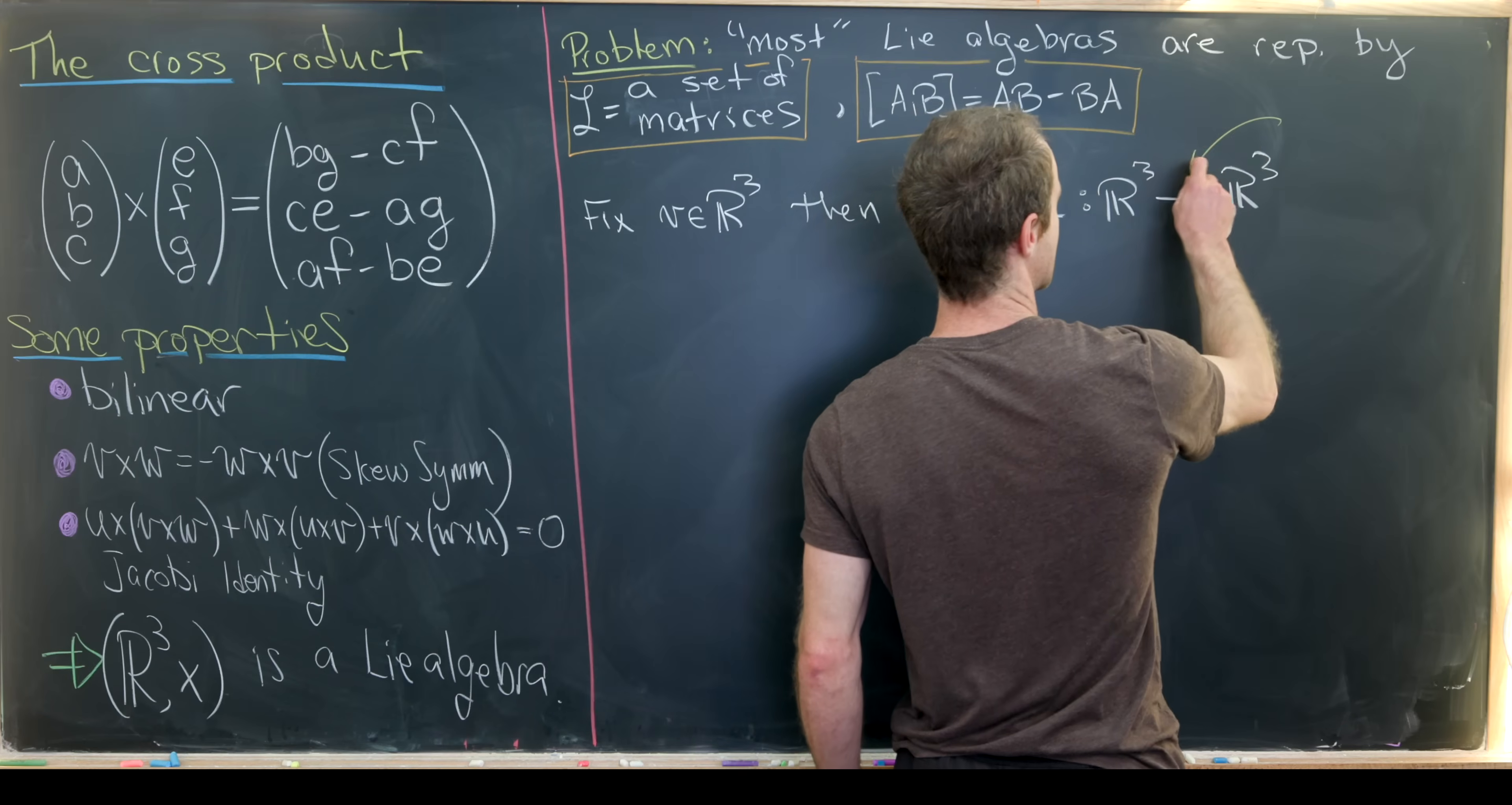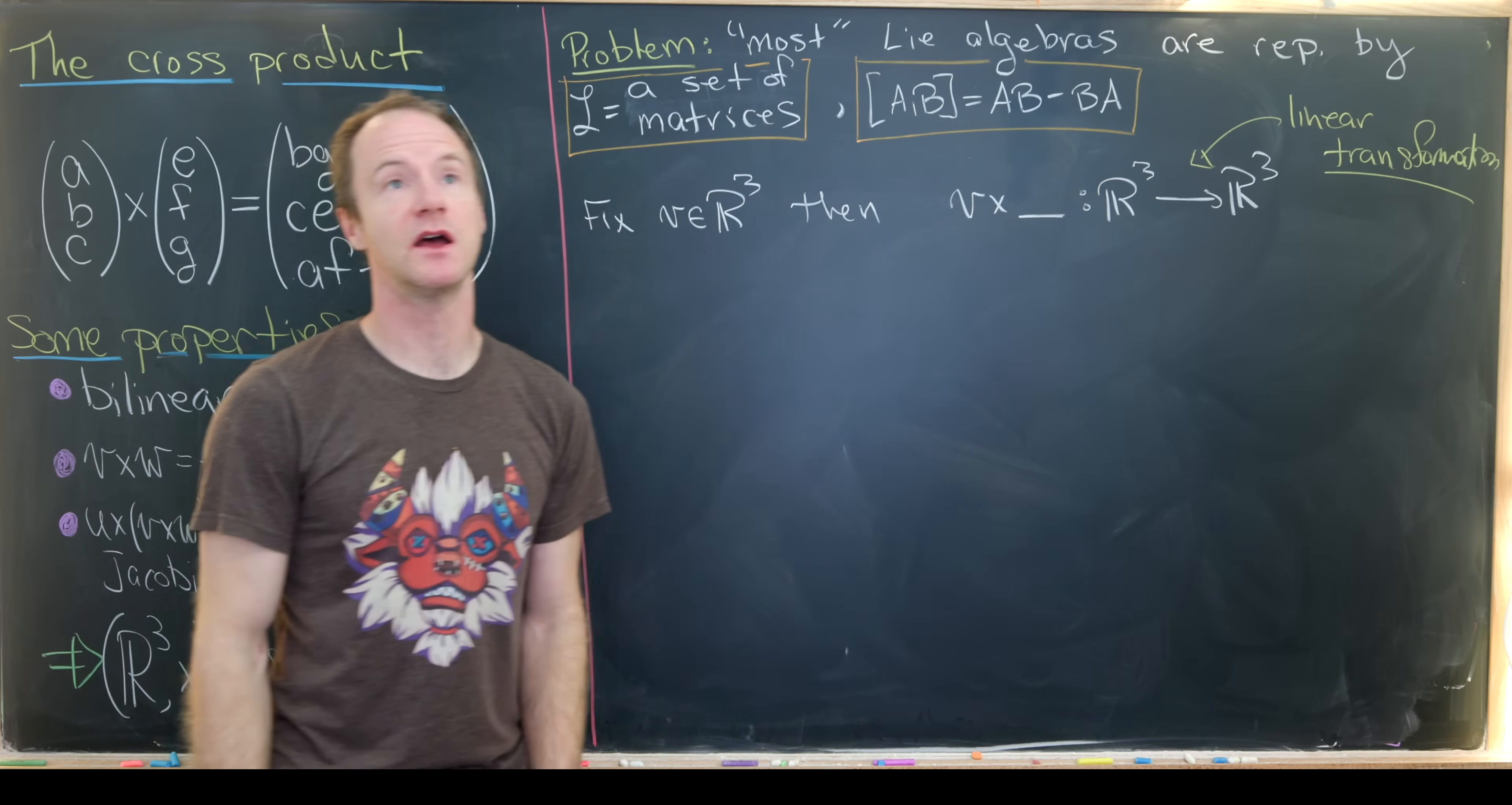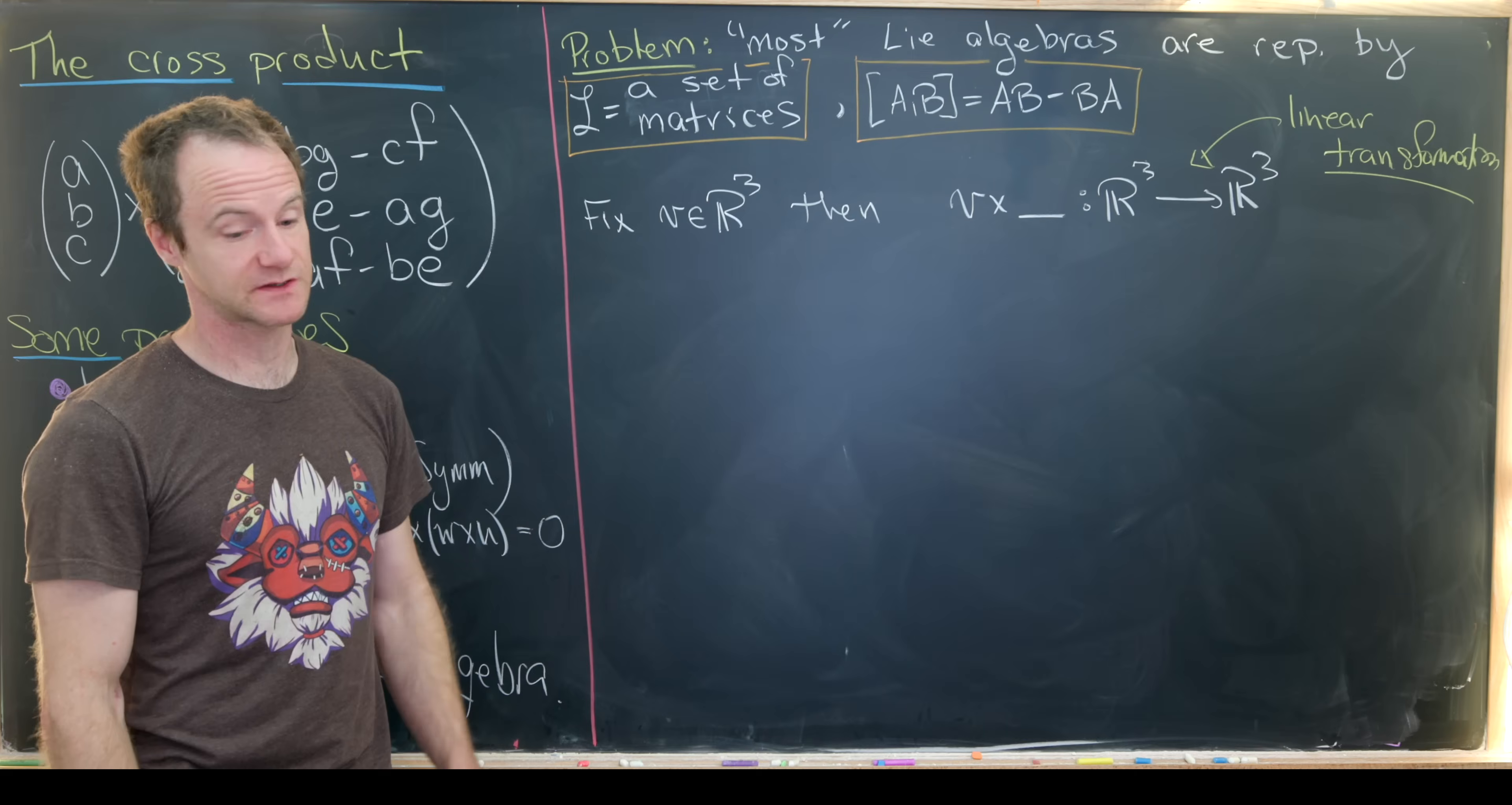So V cross blank is a linear map from R3 to R3. But one thing that we know is that any linear transformation can be described as multiplication by a matrix. And so that's especially true when we have here a finite dimensional vector space. Since we've got a three-dimensional vector space, we should be able to write this left cross product by V as multiplication by a three-by-three matrix.